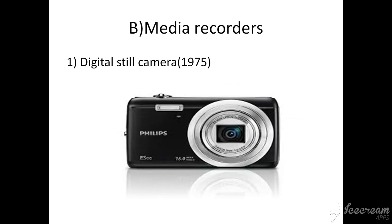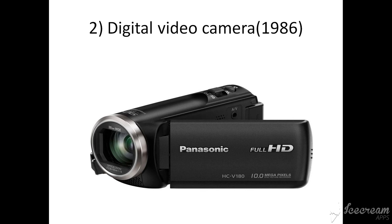The second type is the digital video camera, introduced in 1986. A digital video camera recorder, or digital camcorder, is a device that records video to formats including Digital8, Mini-DV, DVD, a hard drive, or solid-state flash memory. Some digital camera recorders can even record in high-definition quality.